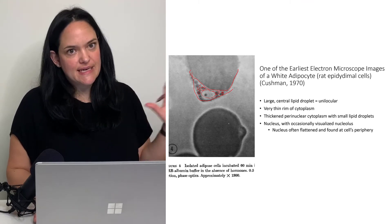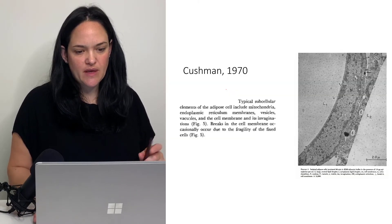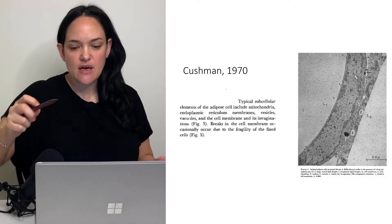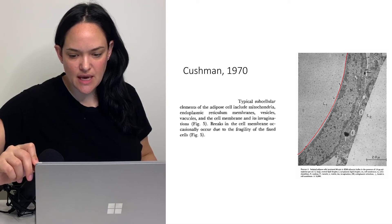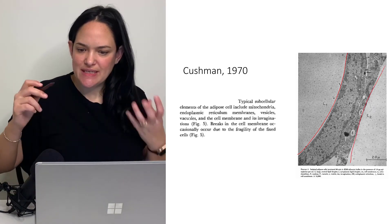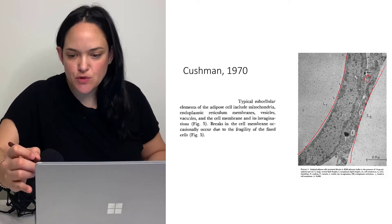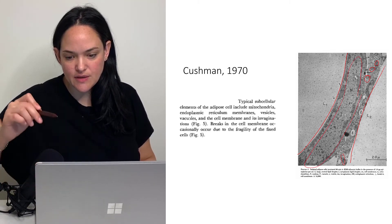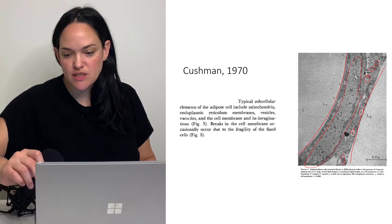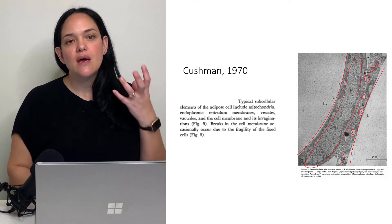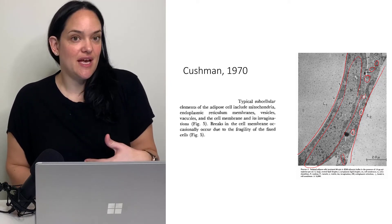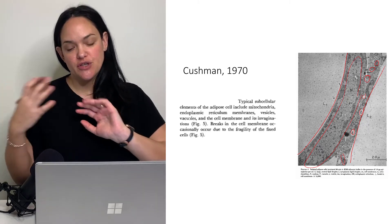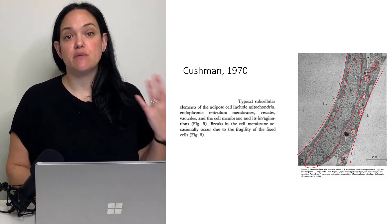The nucleus is often found flattened and at the periphery of the cell, which is easier to see on a light microscope. Looking more closely at the cytoplasm, we can see the cell membrane, and if you zoom in, mitochondria — not many, but present — along with the nucleus and some small lipid droplets. There's also some endoplasmic reticulum. The main point is that cellular activity is localized to the perinuclear region of the cytoplasm, pushed to the outside of the cell — very different from more metabolically active cell types.